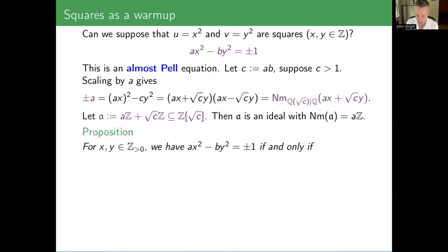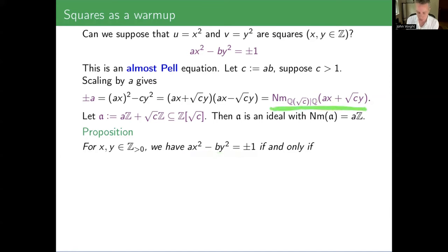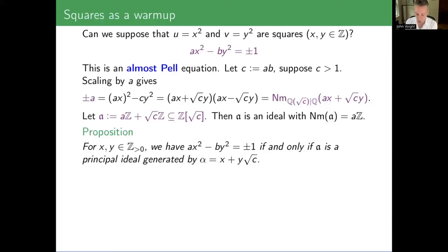It's not hard to show that this factor 𝔞 is an ideal of ℤ[√C]. In fact, it's an invertible ideal, locally principal. And if you take the GCD of all the possible norms of elements from ideal 𝔞 — or you consider the ideal generated by all those norms — then you get exactly A times ℤ.